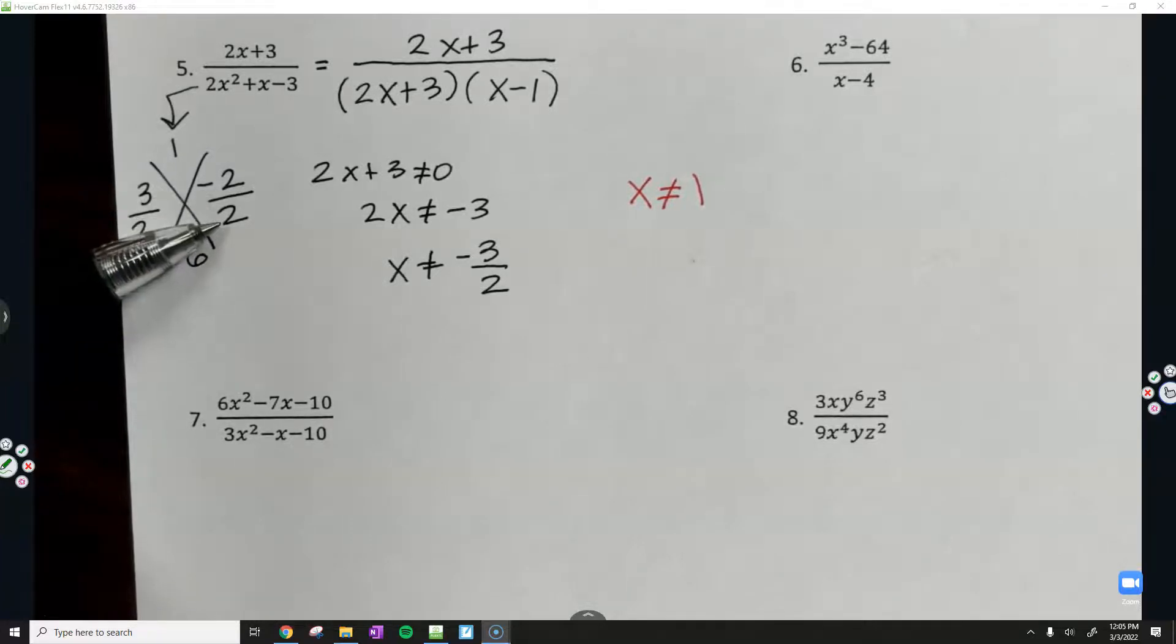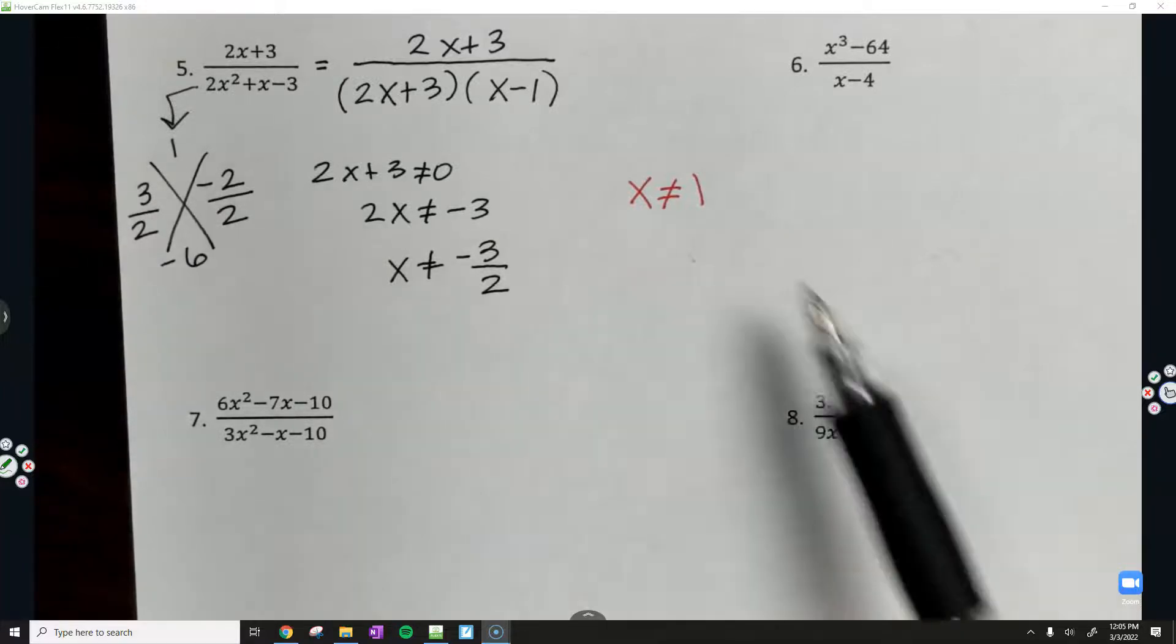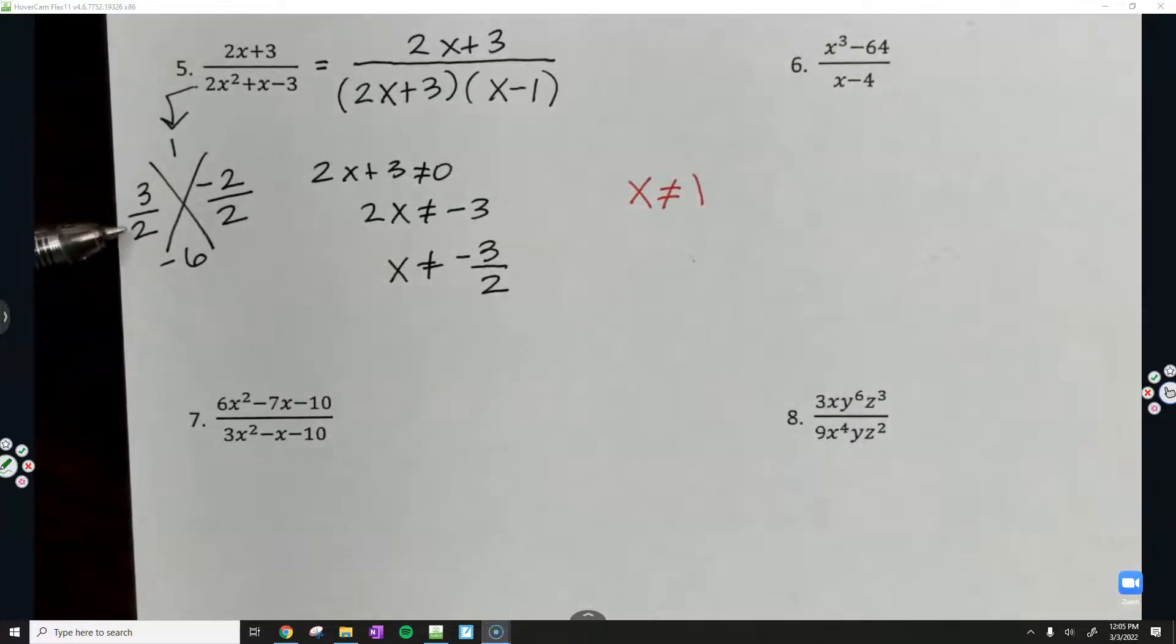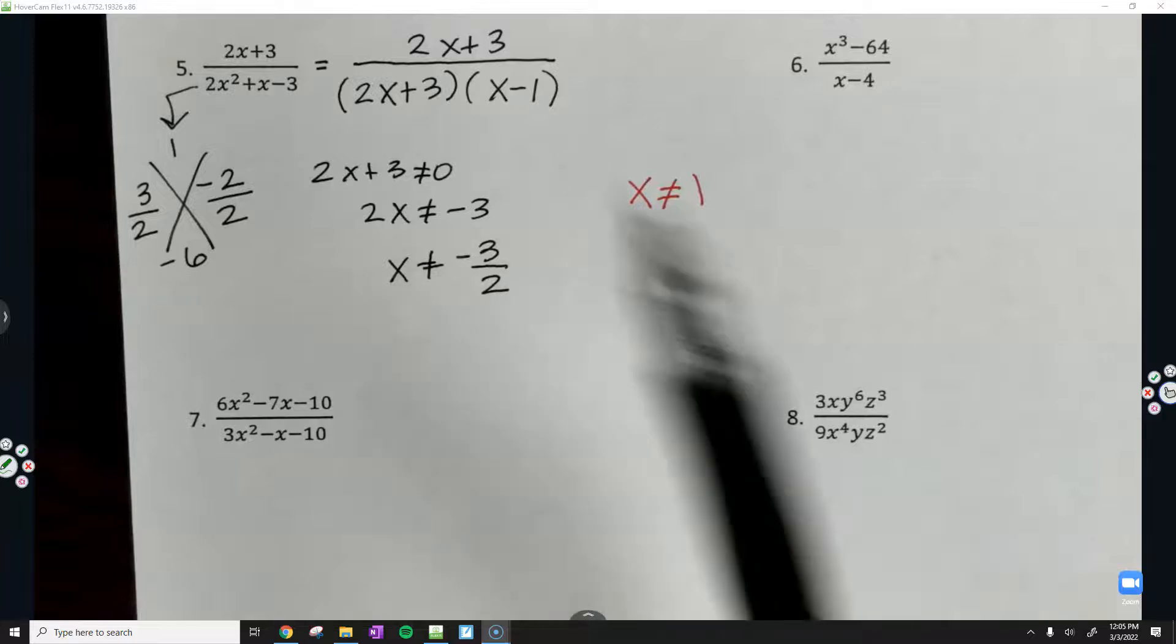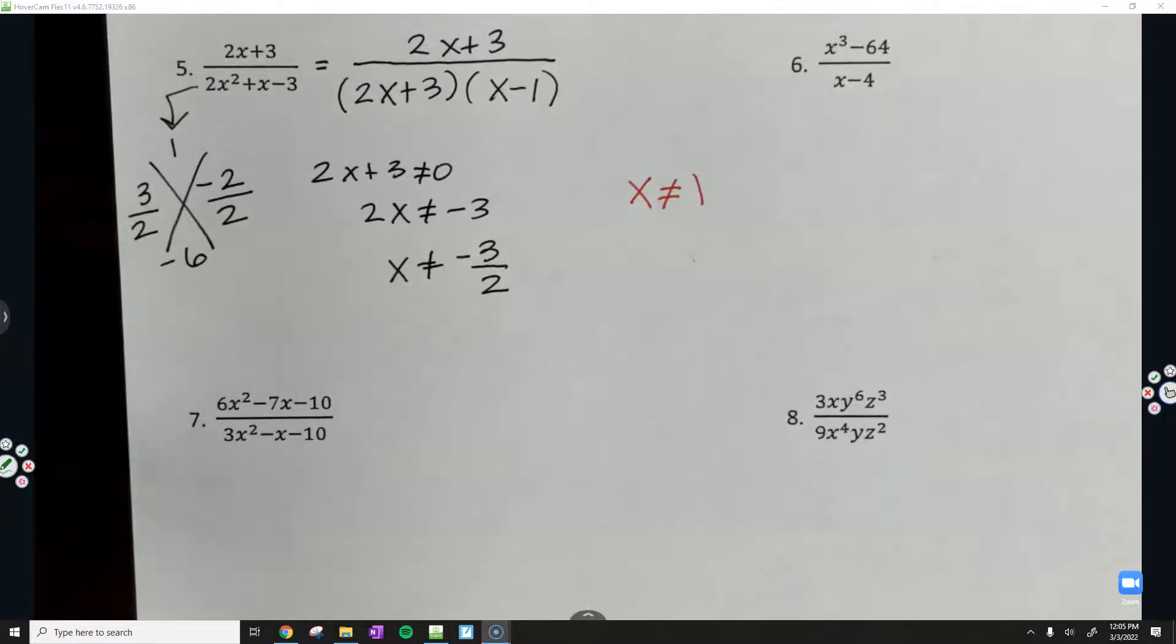Notice a negative 2 divided by a positive 2 is a negative 1. This is a negative 1. There's the opposite. Here's 3 halves. And then there's the opposite. So, that's another way to get your restrictions.